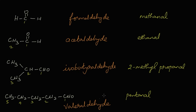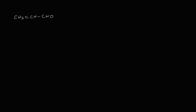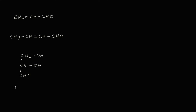Now let's learn some more structures. The next aldehyde is CH₂=CH-CHO. The following one is CH₃-CH=CH-CHO. Then we have HOCH₂-CH(OH)-CHO, and finally a compound with CH₃ and CHO with a methoxy substituent.